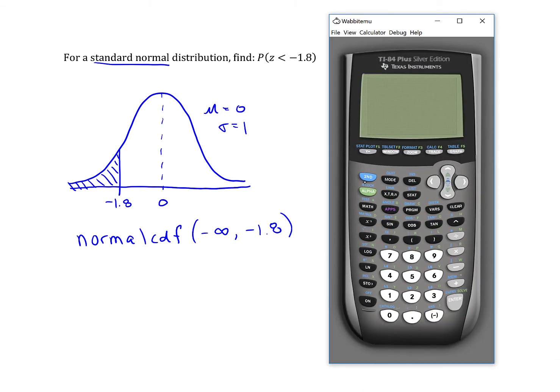So to put this in the calculator, I hit second and vars, which takes me to the distribution menu. Come down to normal CDF.